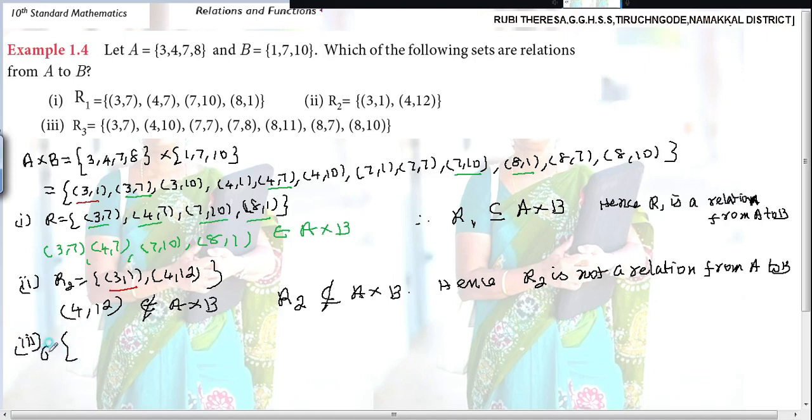Instead of writing this just from this itself, you can compare and write. Then 4,10, 7,7, 8,7, 8,10. Better you write and practice also. Because you are all small children. This is the time to write a lot. So, you have to write and see.